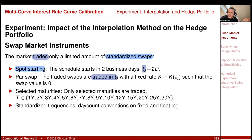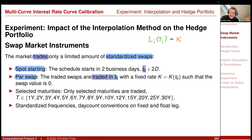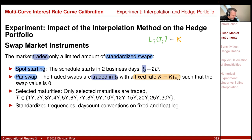So all the swaps you can trade are standardized and spot starting. Then the market trades usually par swaps. This means you cannot ask for a swap that exchanges a floating rate L_i, fixed at T_i, against a constant fixed rate K, and ask what is the price of that swap. The usual way is that you say: I would like a swap that starts in two business days and has a maturity of five years — what is the corresponding fixed rate? So you trade a par rate swap, meaning you get a fixed rate such that the value of this swap is zero.